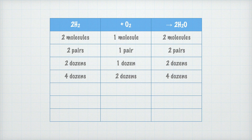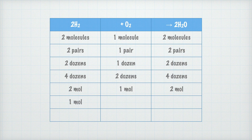We can of course use the unit mole as well. Mole is just a number, much like dozen or pairs. If we have two moles of hydrogen molecules, one mole of oxygen molecules is needed for two moles of water molecules to form. If we only have one mole of hydrogen, the amount ratio means we must have 0.5 moles of oxygen, and then one mole of water is formed.